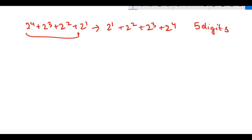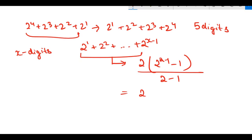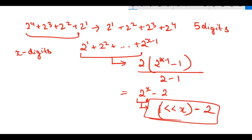For 5 digits we have a geometric progression: 2 raised to 1 plus 2 raised to power 2, and so on. If there were X digits in the lucky number, this goes up to 2 raised to power X minus 1. Using the GP formula - a times r raised to n minus 1 over r minus 1 - on solving we get 2 raised to power X minus 2. Now 2 raised to power X can be written in code as 1 left shift X, so the formula becomes: 1 left shift X, minus 2.